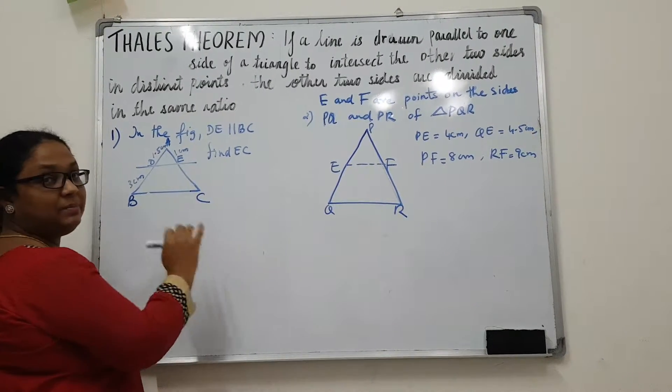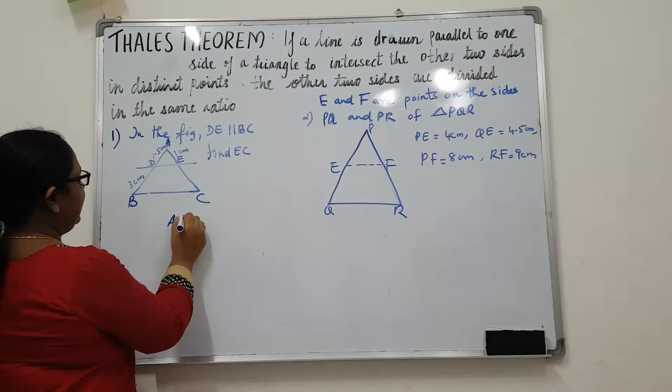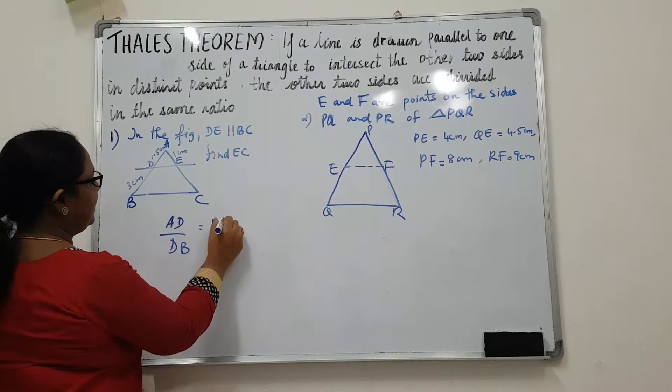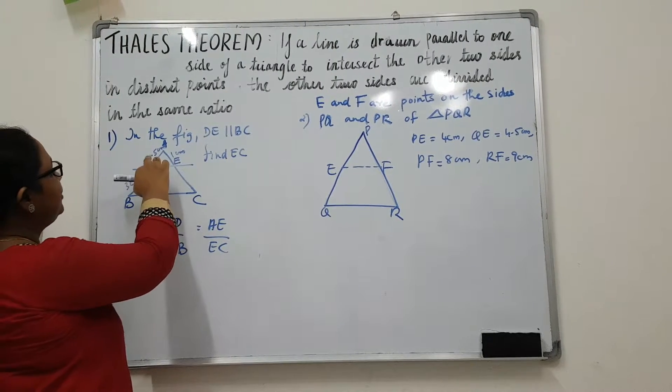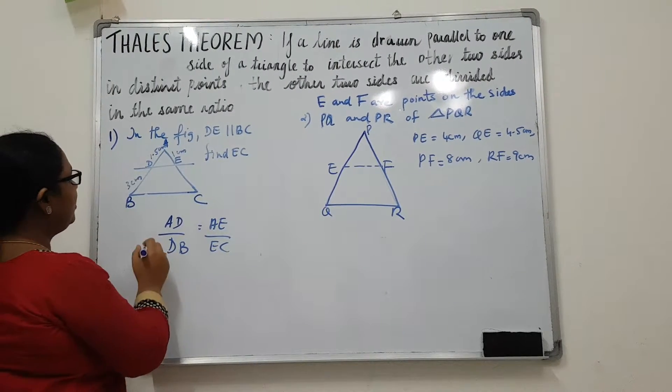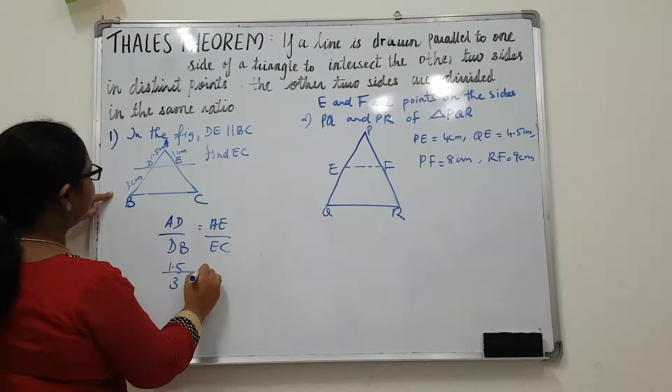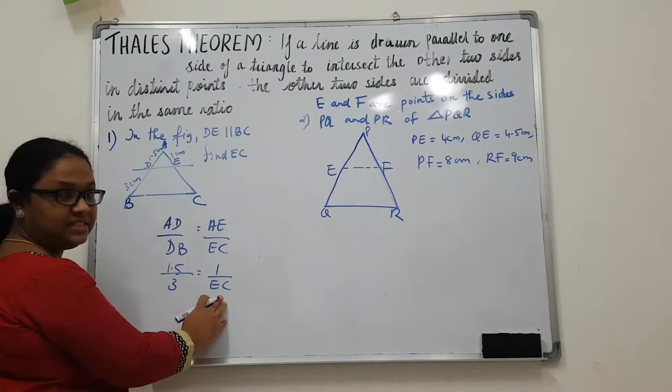So using basic proportionality theorem or BPT, we can write AD by DB is equal to AE by EC. So this line divides the triangle in the same ratio. So what is AD? AD is 1.5, DB is 3, AE is 1 cm, and we can find out the value of EC.